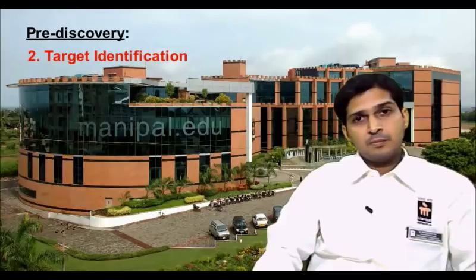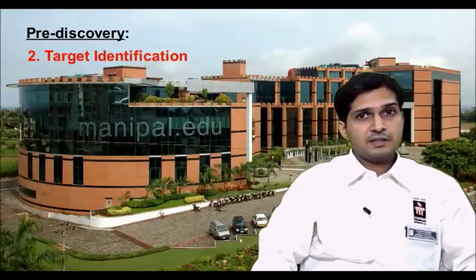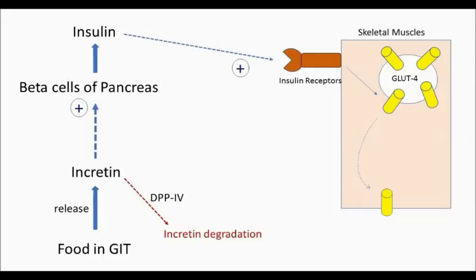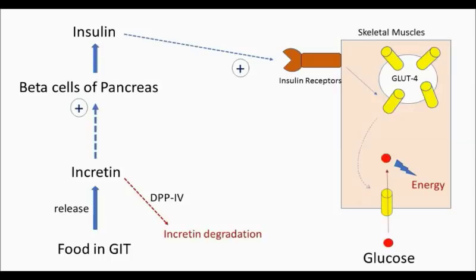Let us take the example of insulin-mediated glucose uptake. When food reaches the stomach and intestine, chemical messengers called incretins are released. Incretins stimulate the beta cells of the pancreas to release insulin. These incretins are later destroyed by the enzyme dipeptidyl peptidase. Insulin then binds to the insulin receptors located on the skeletal muscles and causes translocation of GLUT4 glucose transporters to the cell membrane from their intracellular docking sites. Glucose enters skeletal muscle through these transporters and is utilized for energy production. In some cases of type 2 diabetes, the release of insulin from the pancreas is reduced, which may affect glucose utilization by the muscle cells and cause hyperglycemia.